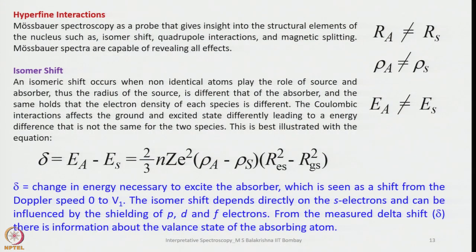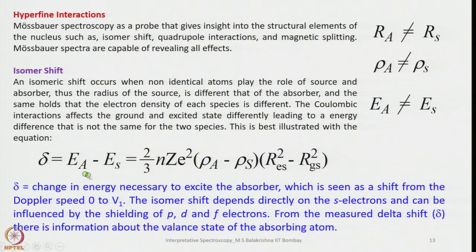Let us discuss hyperfine interactions in Mössbauer spectroscopy. Mössbauer spectroscopy as a probe gives insight into structural elements of the nucleus such as isomer shift, quadrupole interactions, and magnetic splitting. An isomer shift occurs when non-identical atoms play the role of source and absorber — the radius of the source differs from that of the absorber, and the electron density of each species is very different. Coulombic interactions affect the ground and excited states differently, leading to an energy difference that is not the same for the two species.